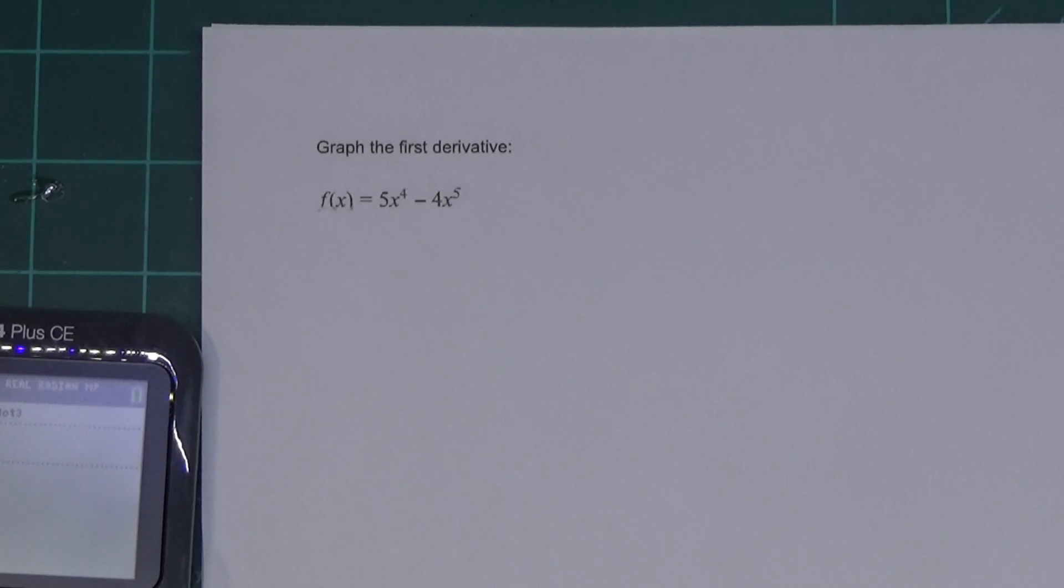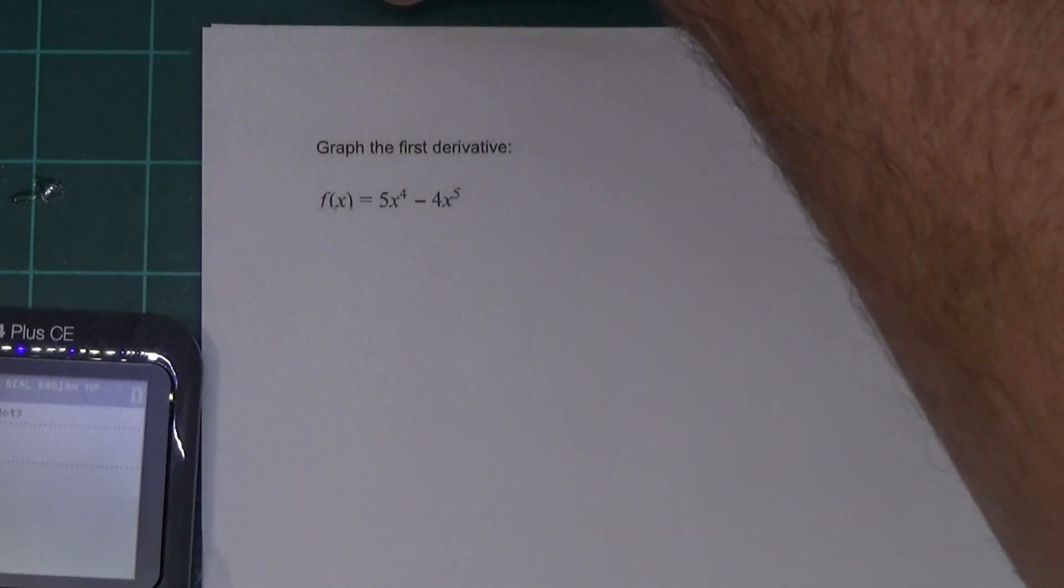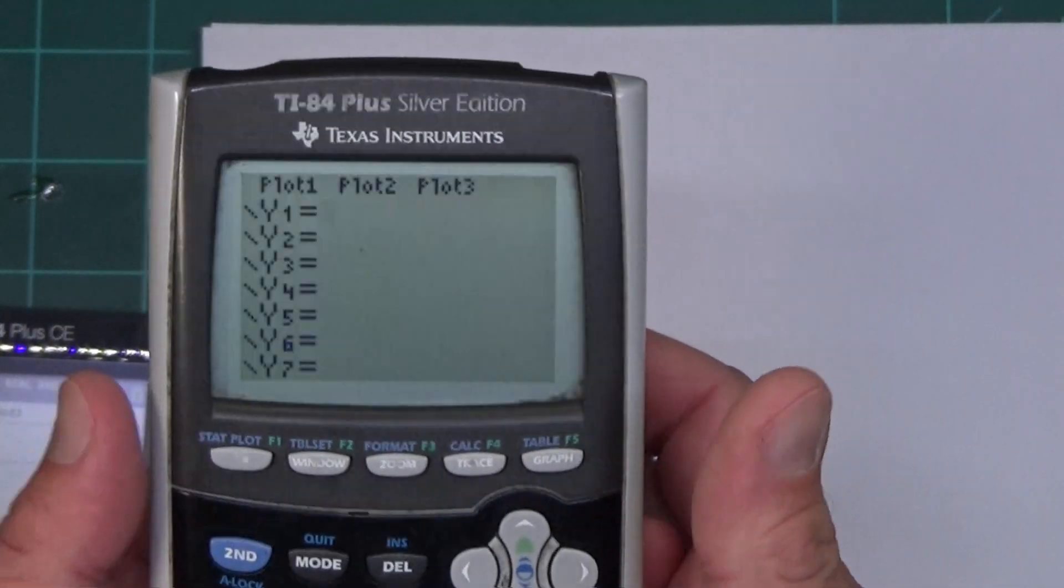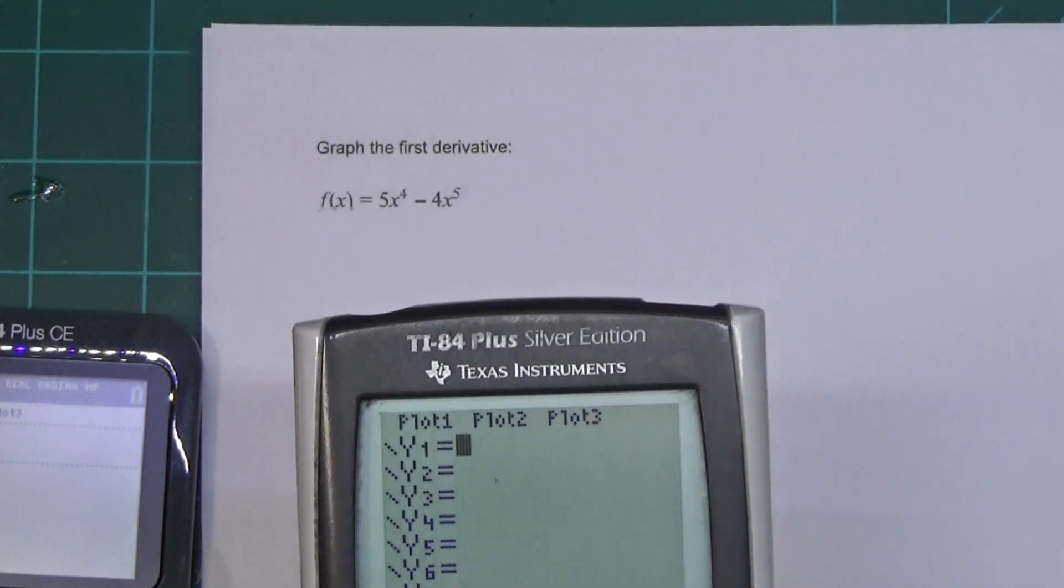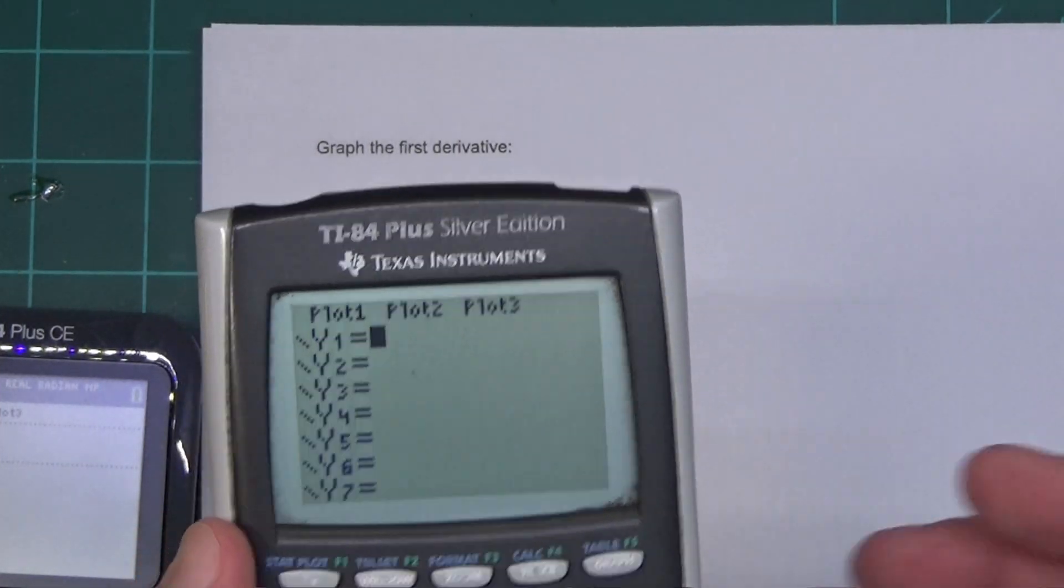All right, we're going to learn how to graph a derivative using a TI-83-84 calculator. I'm going to do both on the same video because it's kind of crazy to do two videos with tiny little differences. For the 83, I'm going to use an old 84. It has the same operating system as the older 83s, so it's going to look exactly the same as an 83.